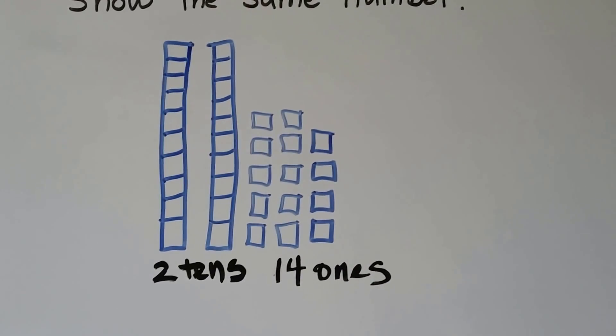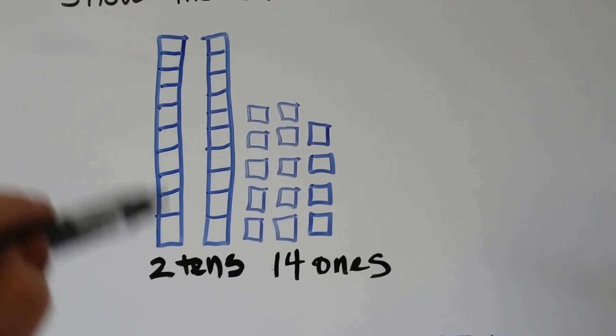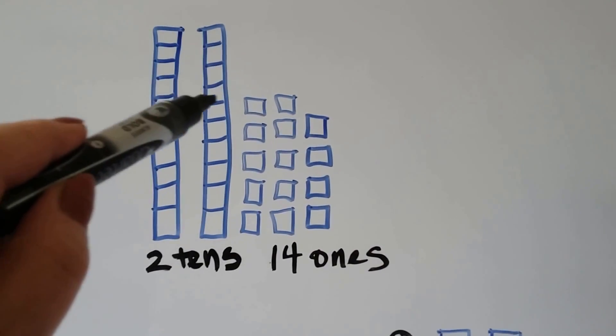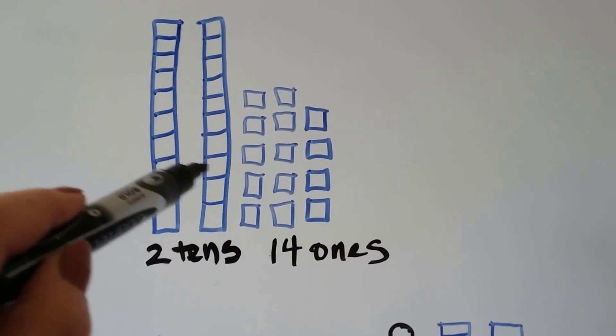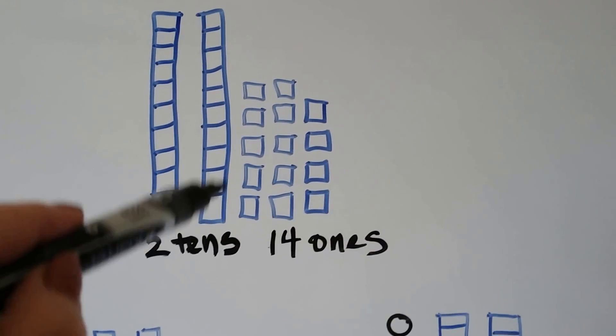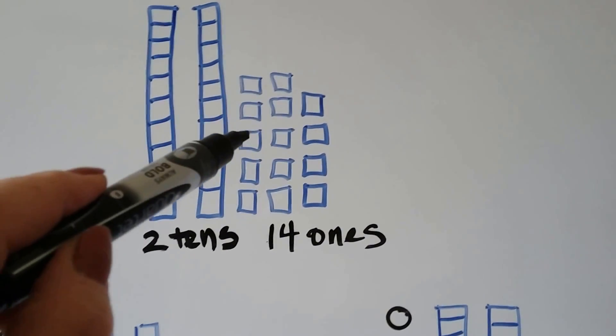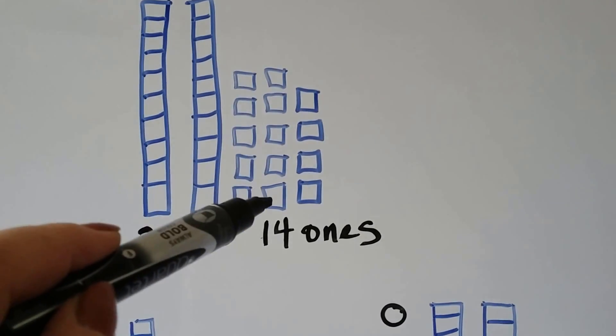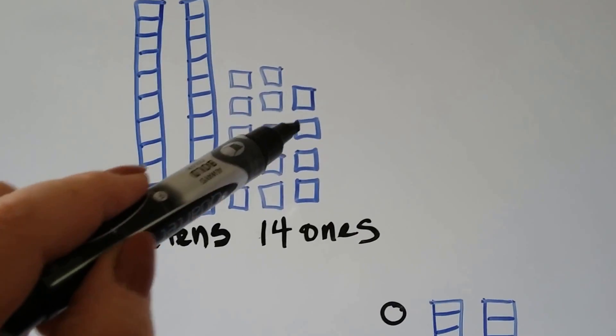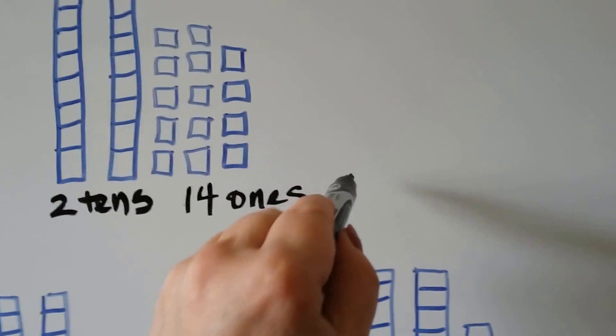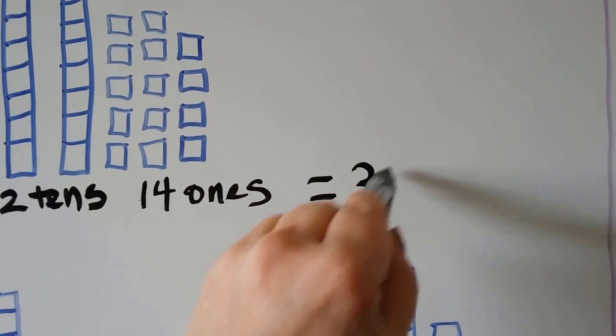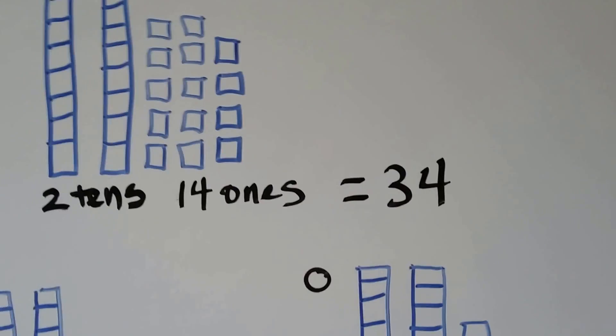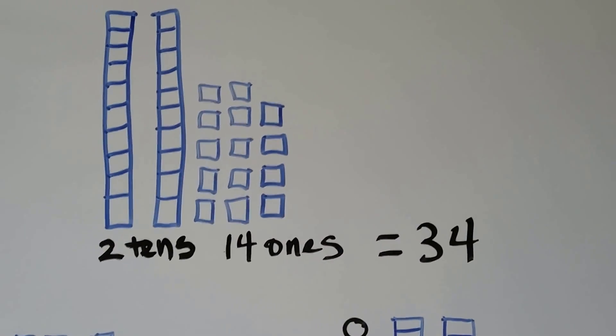How many are there in all? 10, 11, 12, 13, 14, 15, 16, 17, 18, 19, 20, 21, 22, 23, 24, 25, 26, 27, 28, 29, 30, 31, 32, 33, 34.